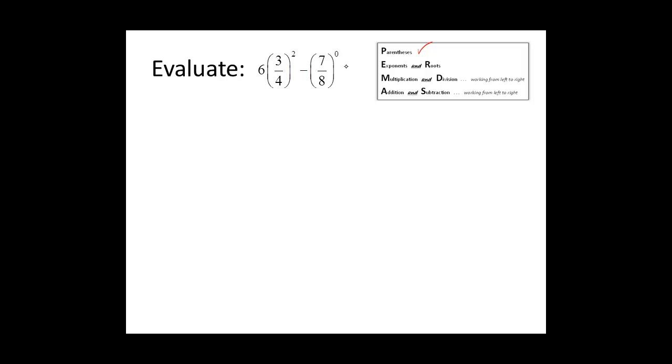We learned that back in another section. So let's write what 3 fourths squared means. It means 3 fourths times 3 fourths. And anything to the zero power is equal to 1. 3 times 3 is equal to 9, and 4 times 4 is equal to 16.